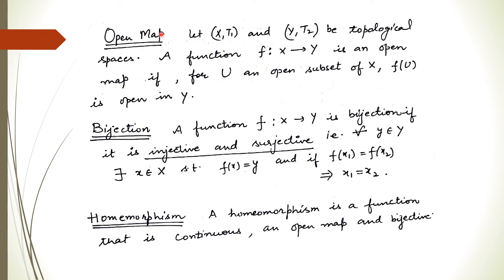The next definition is open map. Given two topological spaces with topologies T1 and T2, and a function mapping from X to Y, this mapping is said to be an open map if for any open subset of X, its image is also open in Y. So every open set here maps to an open set in Y — that mapping sends every open set to an open set, so it is called an open mapping.